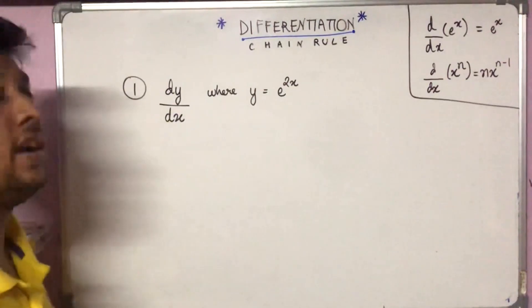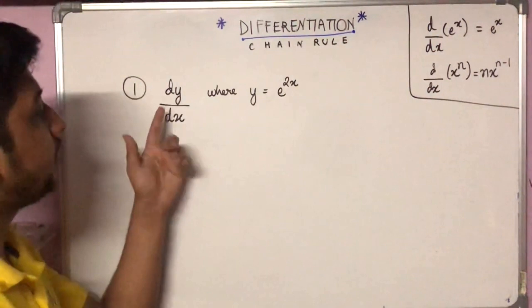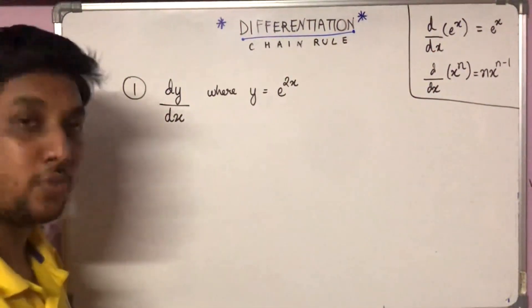Suppose we want to find dy/dx where y equals e to the power 2x. That means basically we need to find d/dx of e^(2x) and we need to differentiate.